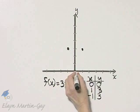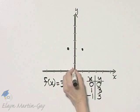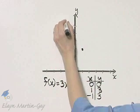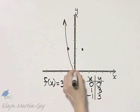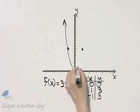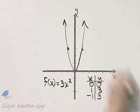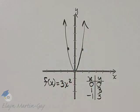So let's draw in a parabola shape. The vertex is at (0, 0), as you can see from this graph.